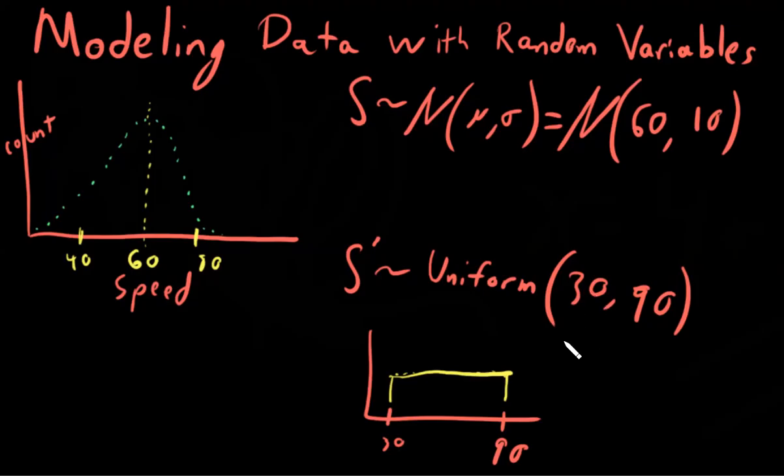Said another way, if you were to ask for the expected value of S in both cases, you'd actually get the same thing. The expected value of the normal distribution is 60 and the expected value of the uniform distribution between 30 and 90 is also 60. So, in one sense, both of these models do accurately describe, both these models of distributions do model our data well, at least with respect to the average value, mu.